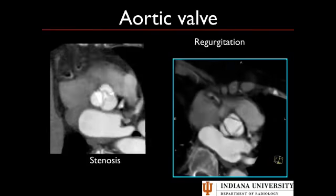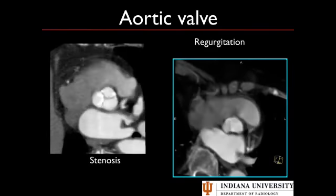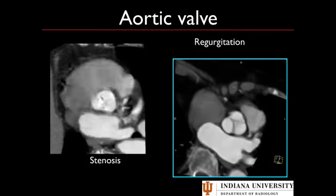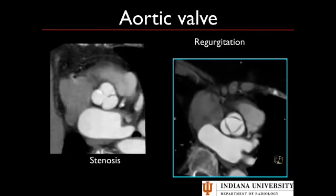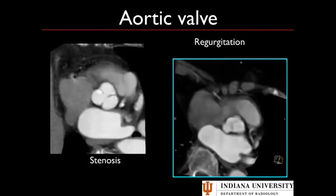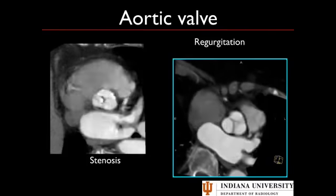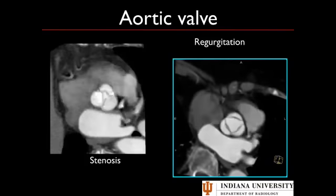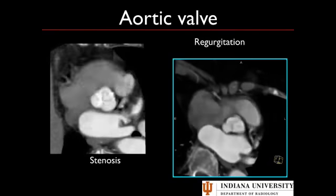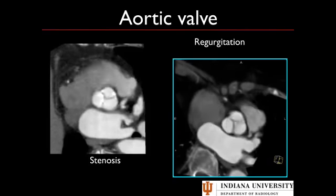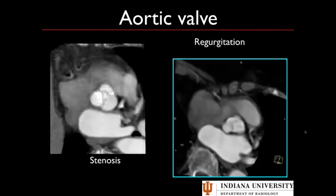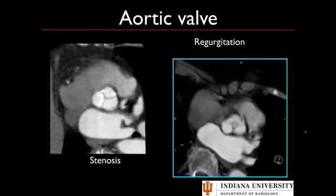Here we have two movies showing the aortic valve. On the left is a calcified aortic valve — you can see the valve is not opening very well, consistent with aortic stenosis. We can scroll up and down to find the tightest area and measure it by planimetry to categorize the stenosis as mild, moderate, or severe. On the right, the leaflets never actually touch, and that little hole in the middle is consistent with aortic regurgitation.